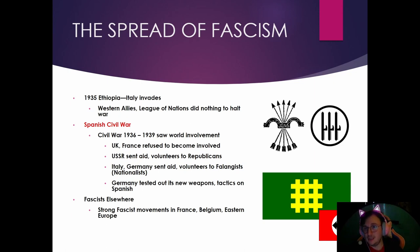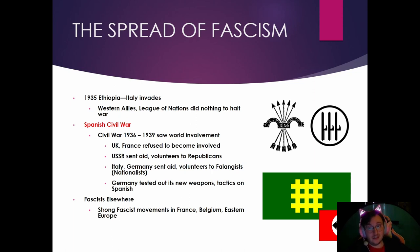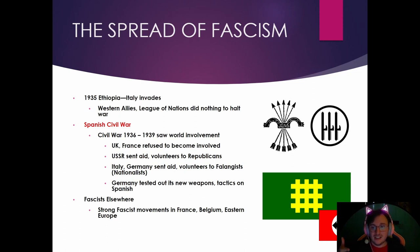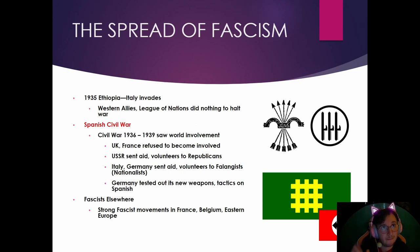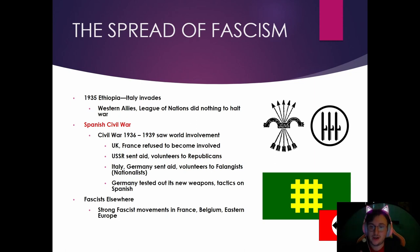The Spanish Civil War lasted from 1936 to 1939 and saw world involvement. The UK and France, dealing with the Great Depression, said they wouldn't help. The USSR sent volunteers to help the Republicans — the liberal side — because they hated fascism. Germany and Italy helped the fascists, which allowed Germany especially to test out weapons, tactics, fast movement, new tanks, guns, and planes. The fascists won, giving Spain a fascist government. Fascism also began popping up in France, Belgium, and Eastern Europe.